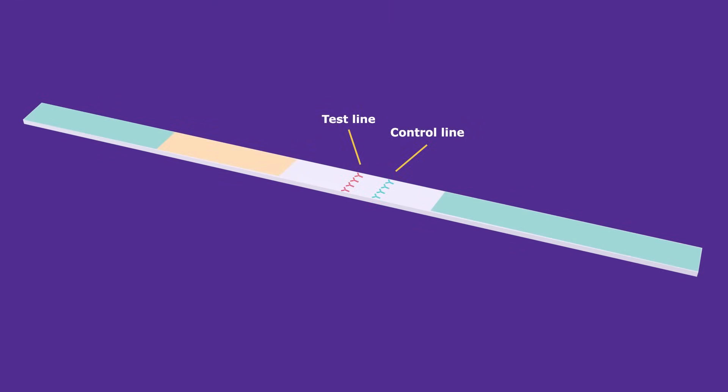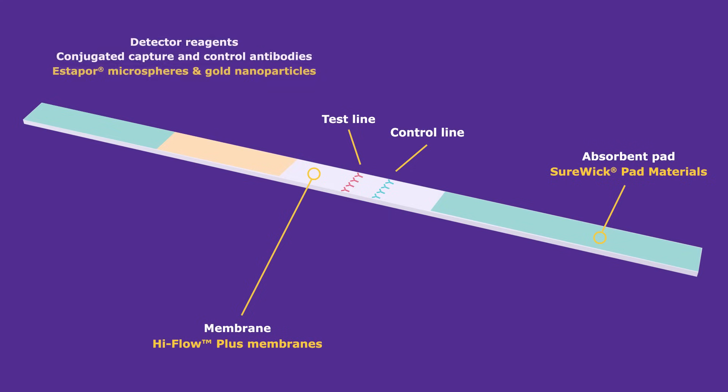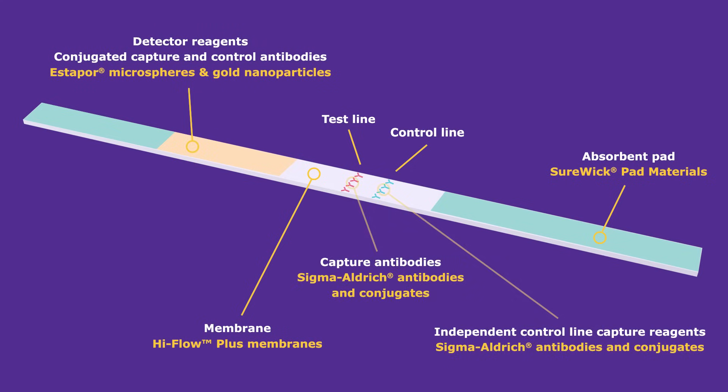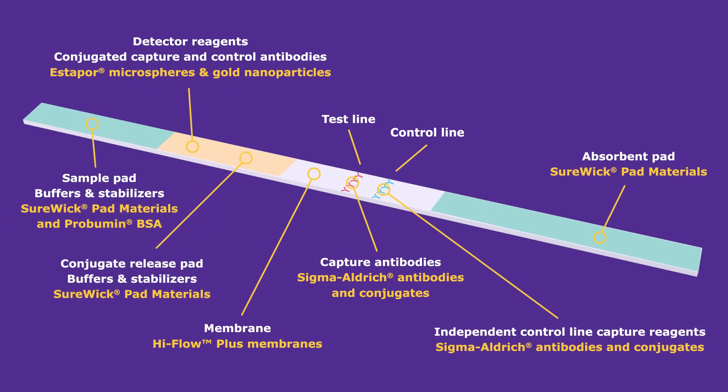The test strip within the device is composed of essential Merck raw materials: Sherwick pad materials, High flow plus membranes, Estapor microspheres and gold nanoparticles, antibodies and conjugates, buffers and stabilizers.